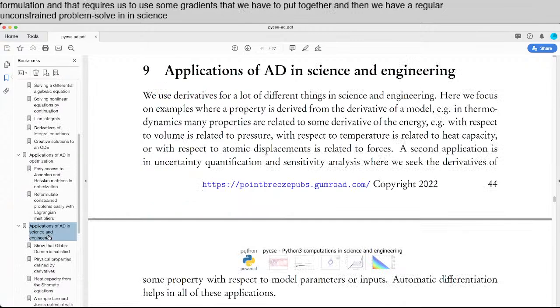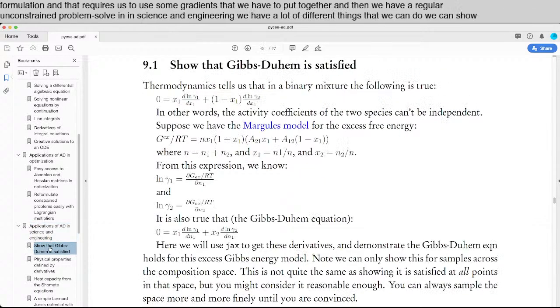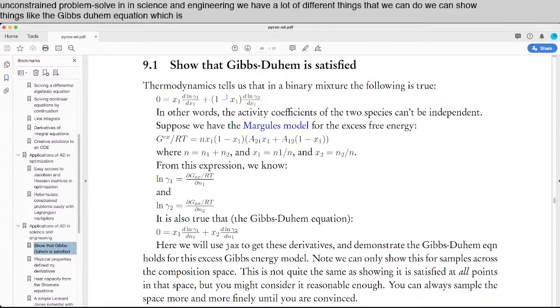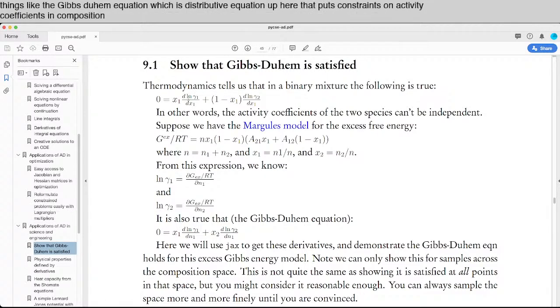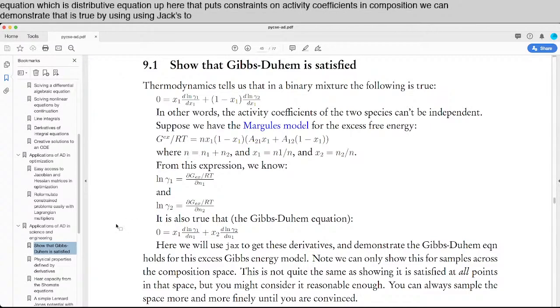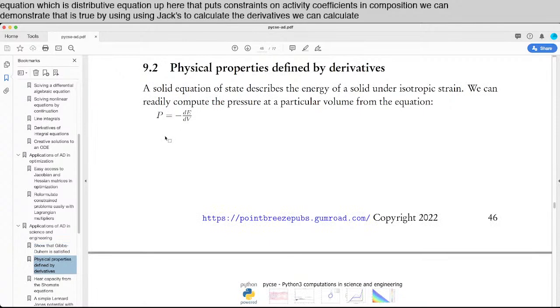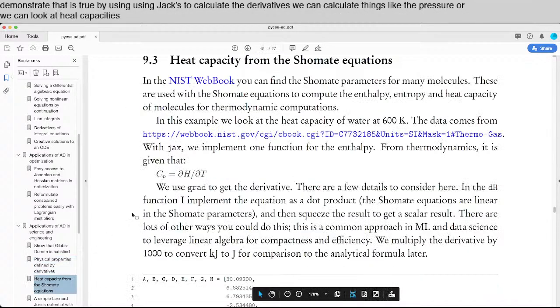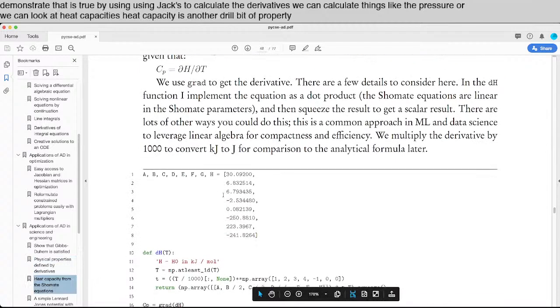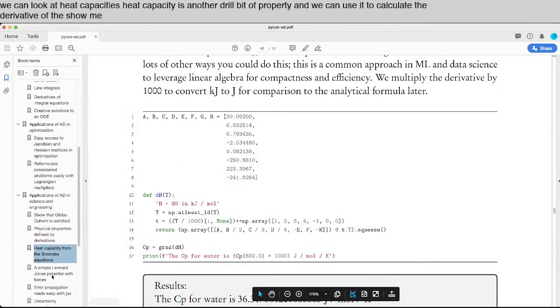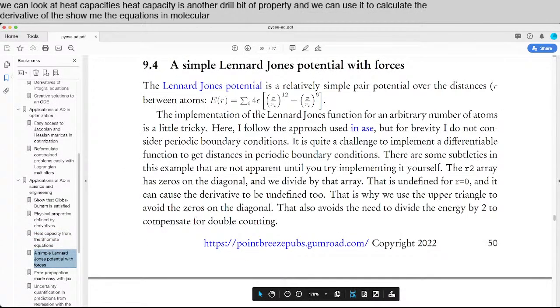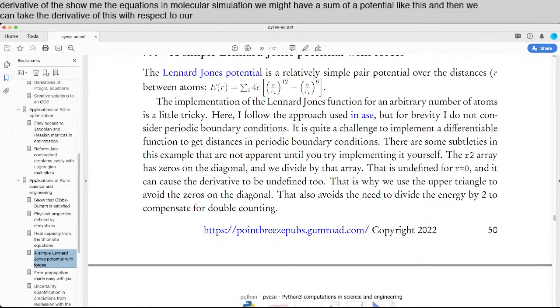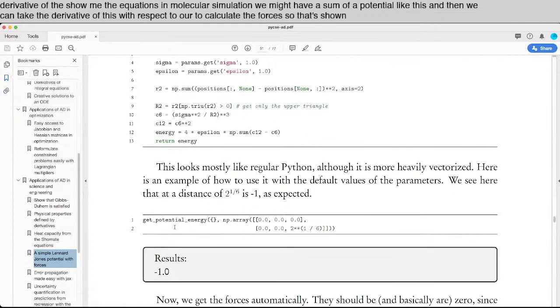In science and engineering, we have a lot of different things that we can do. We can show things like the Gibbs-Duhem equation, which is this derivative equation up here that puts constraints on activity coefficients and composition. We can demonstrate that it's true by using JAX to calculate the derivatives. We can calculate things like the pressure, or we can look at heat capacities. Heat capacity is another derivative property, and we can use it to calculate the derivative of the Shomate equations. In molecular simulation, we might have a sum of a pair potential like this, and then we can take the derivative of this with respect to r to calculate the forces.